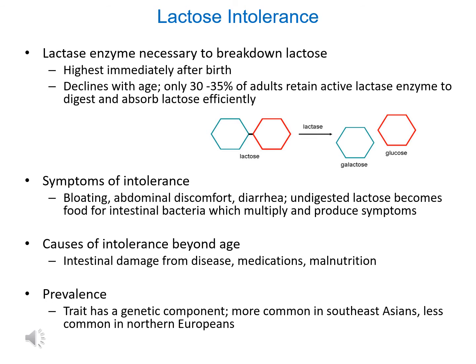The lactase enzyme is produced in the highest amount immediately after birth, which is desirable since an infant's intake will consist of either breast milk or formula. Because of the higher amounts of the lactase enzyme, their digestive tract is equipped to handle the lactose present in either breast milk or formula. However, the lactase enzyme production declines as we age, with only about a third of the adult population producing adequate amounts.